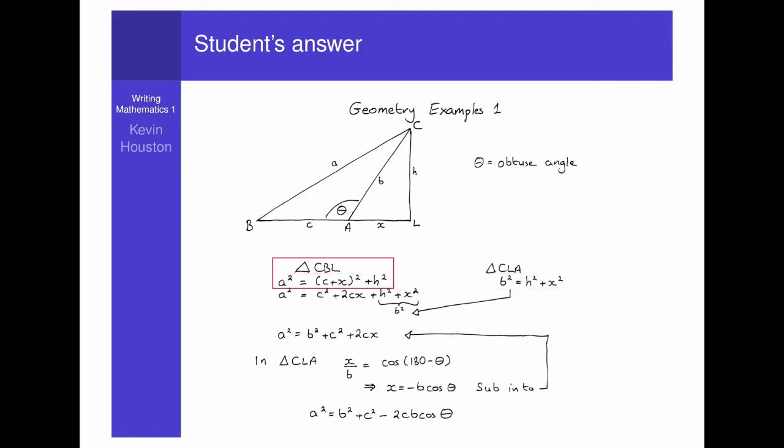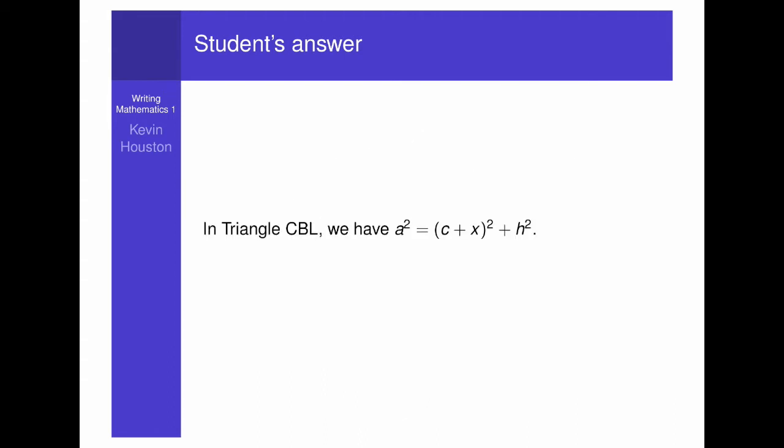Let's work with a solution on the left hand side. Triangle CBL, a squared equals c plus x all squared plus a squared. This is still hard to understand. Let's put it in a sentence. In triangle CBL, we have a squared equals c plus x all squared plus a squared. This is good. It tells us where to look, triangle CBL, to find where the equation came from.